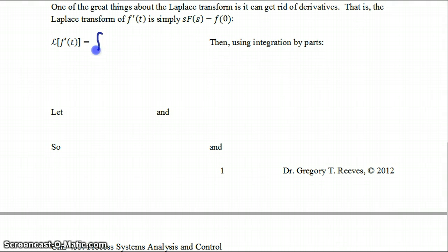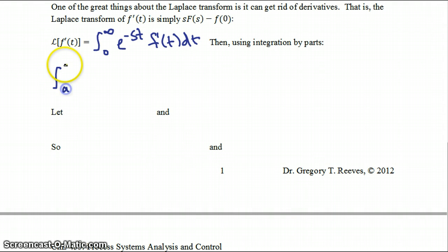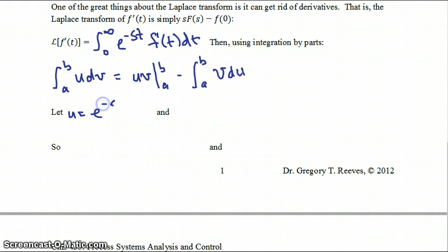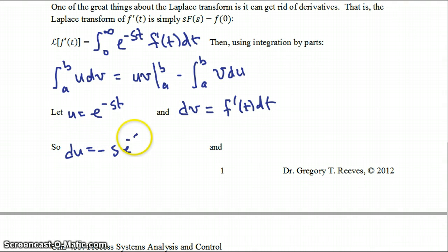To see that, we write out the integral of e to the minus st times f prime of t dt and integrate by parts. Recall that the integral from a to b of u dv equals u times v evaluated from a to b, minus the integral from a to b of v du. We let u equal e to the minus st and dv equal f prime of t dt, so du equals minus s e to the minus st dt and v equals f(t).